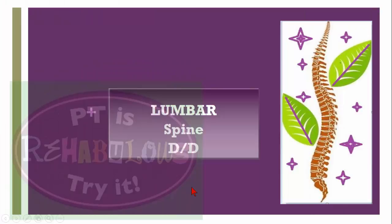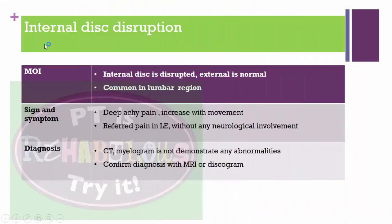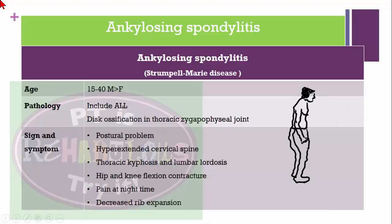For lumbar spine differential diagnosis, internal disc disruption may be caused by external trauma and is common in the lumbar region. Signs and symptoms include deep aching pain that increases with movement and may refer to the lower extremity without neurological involvement. CT scan or myelogram does not demonstrate abnormalities; it is confirmed with MRI or discogram.